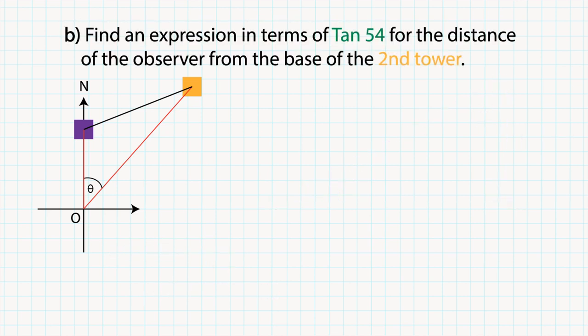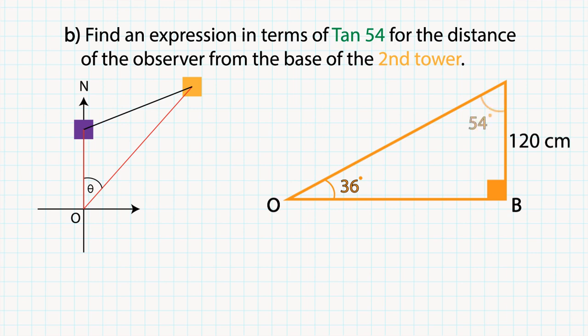Similarly, for the other tower, the angle between the line of sight and the tower is 54 degrees, and tan54 is equal to OB over 120, so OB is equal to 120 tan54. Now that answers the first two parts of our problem.